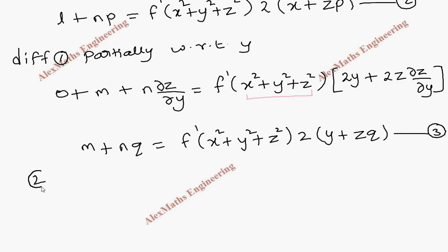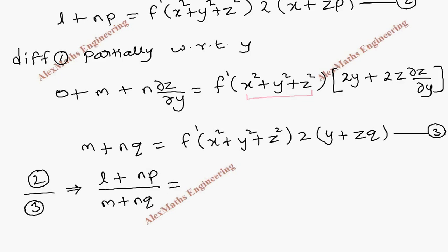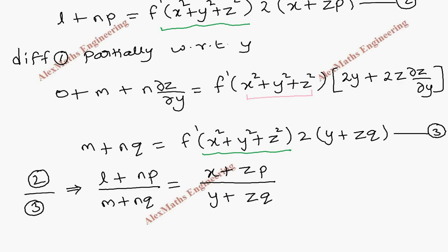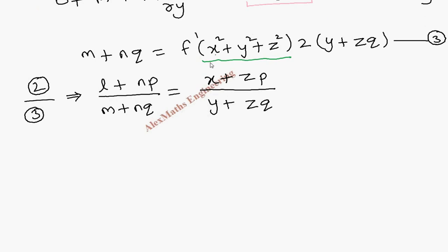We are going to divide the second expression by the third expression. From the left-hand side we get (L + n·p) divided by (m + n·q). When we divide, f dash from both sides gets cancelled and 2 gets cancelled as well. So the remaining is (x + z·p) divided by (y + z·q). Now we have to cross multiply and rearrange in such a way that capital P · small p plus capital Q · small q equals R — in this form we have to give the final answer.